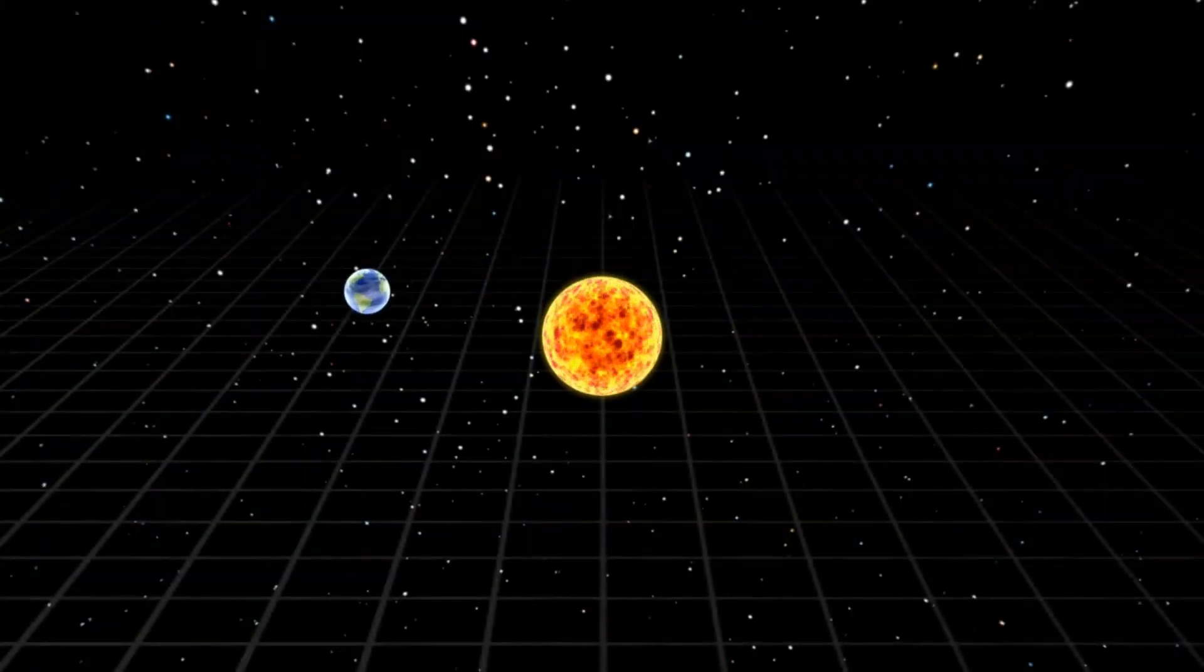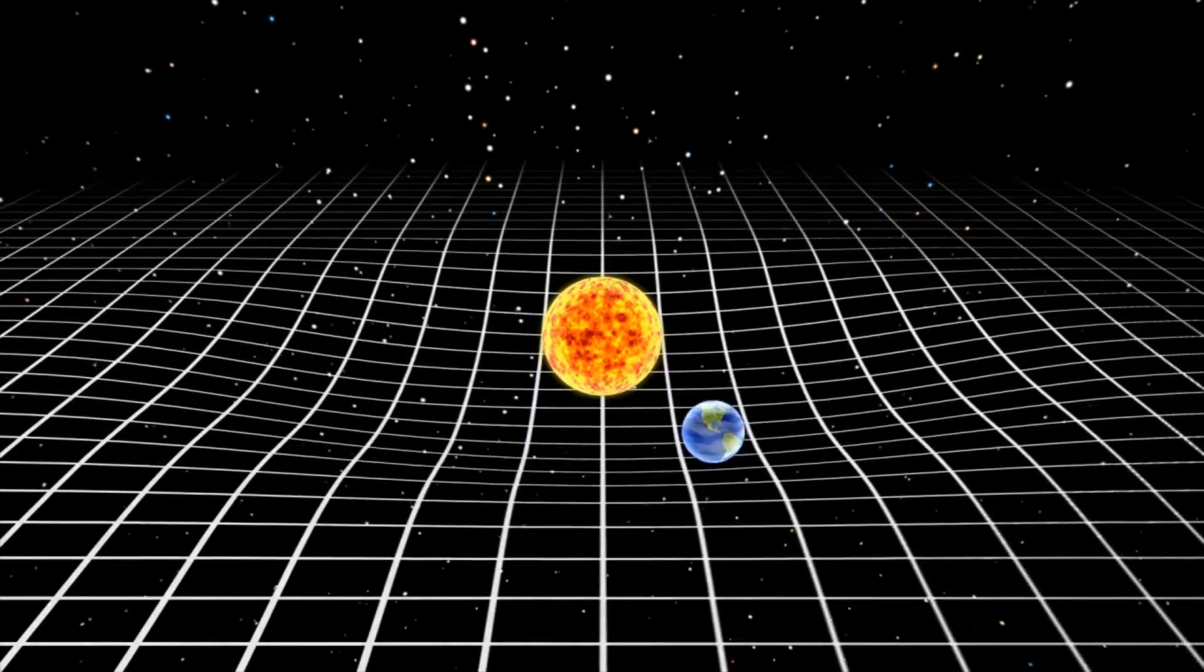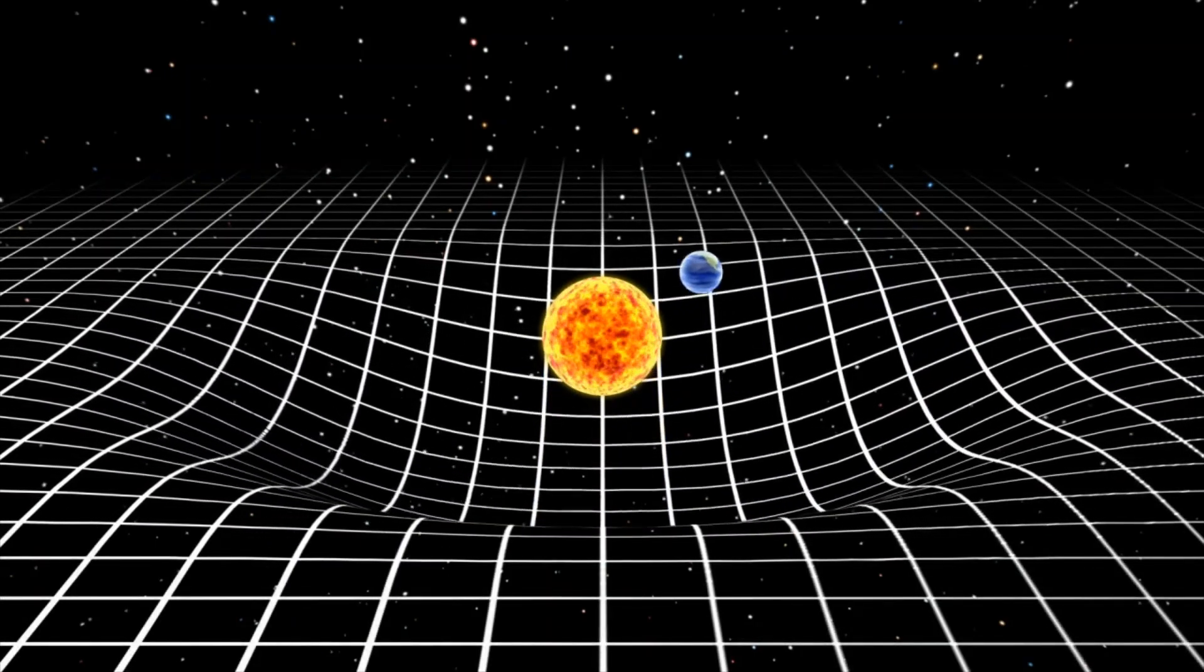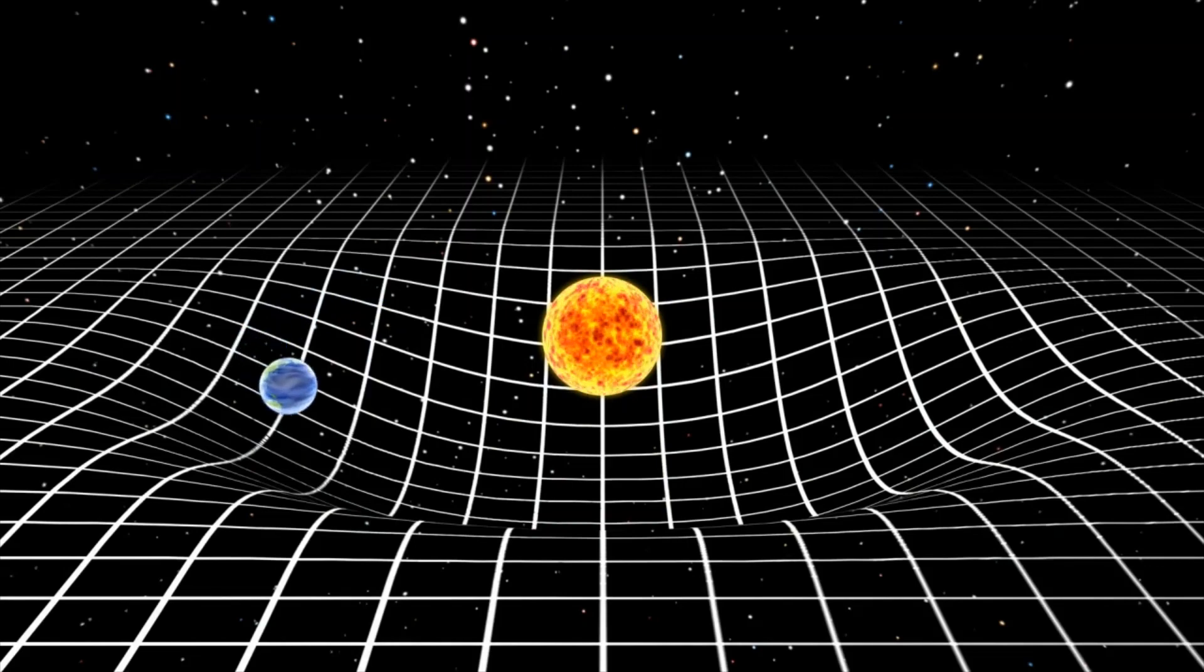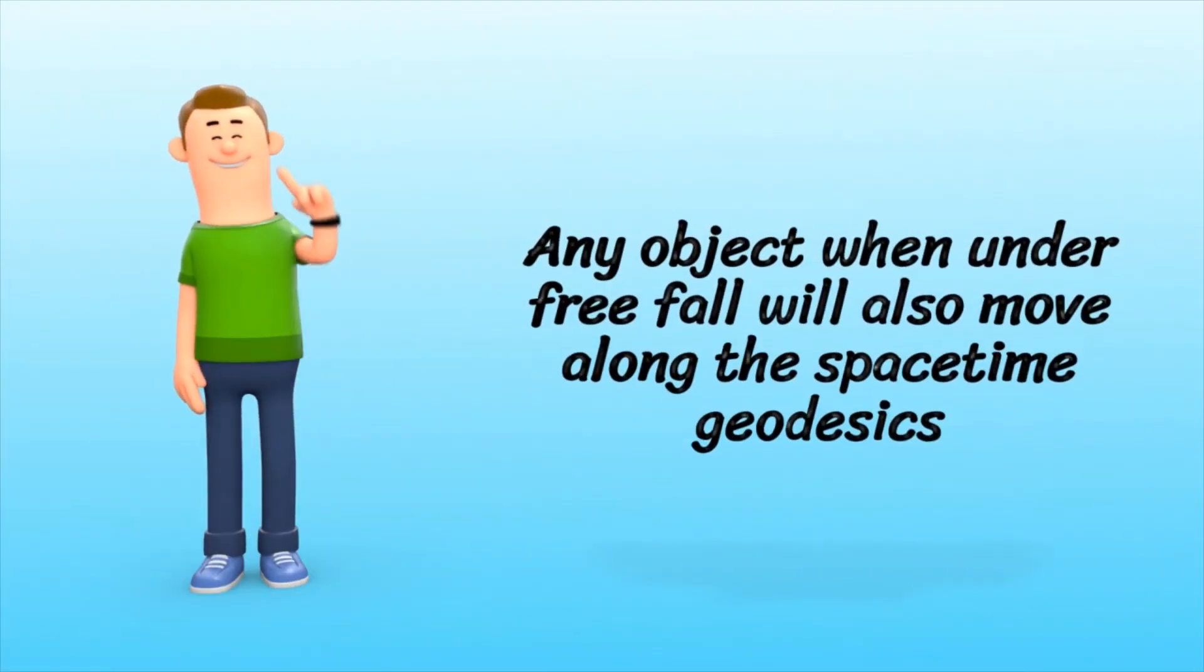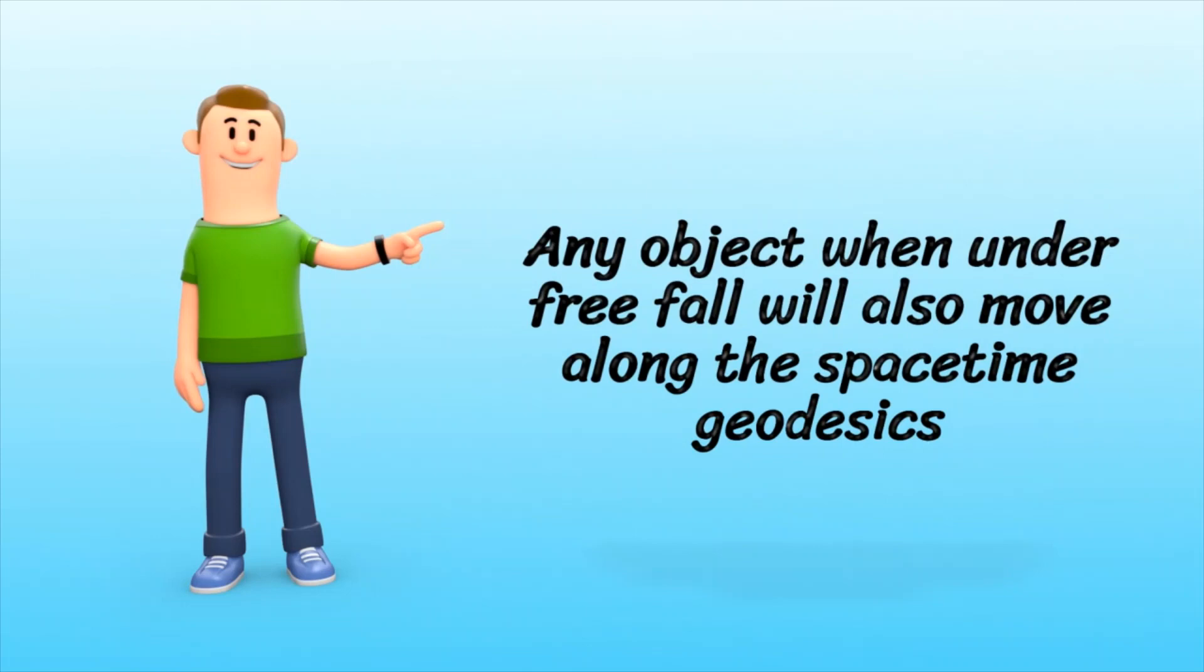Similarly, our Earth is also moving in a straight line and it is space-time geodesics that redefines its path to move in an orbit around the Sun. In addition to this, any object when under free fall will also move along the space-time geodesics.